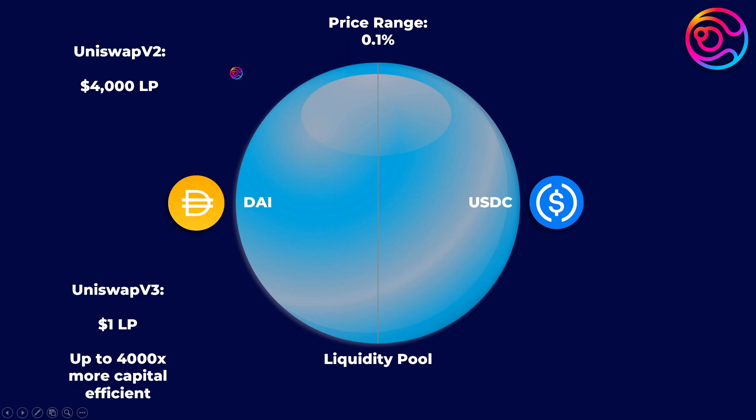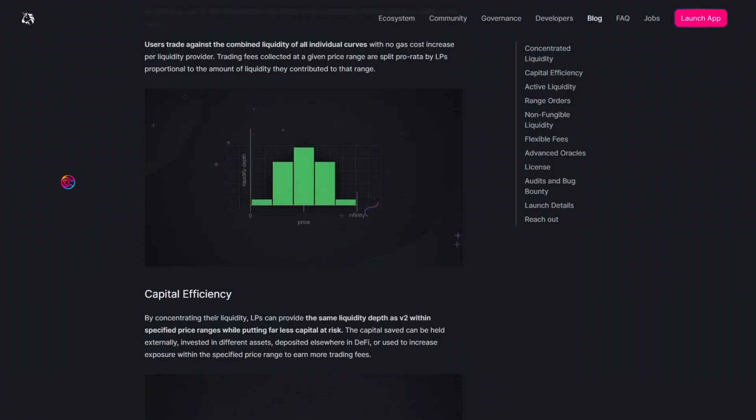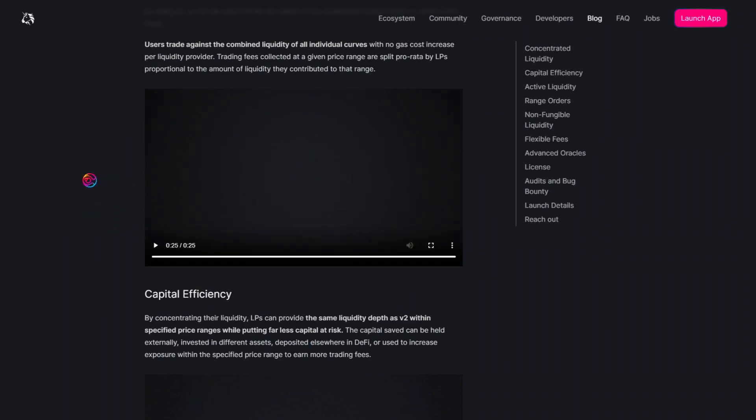This brings us to the downside of concentrated liquidity, which is that if the active trading price range moves outside of a liquidity provider's specified range, their LP shifts entirely to one asset, and they no longer earn trading fees.